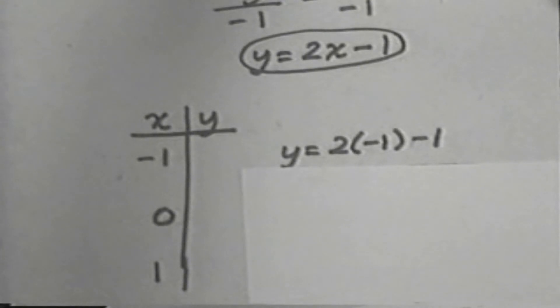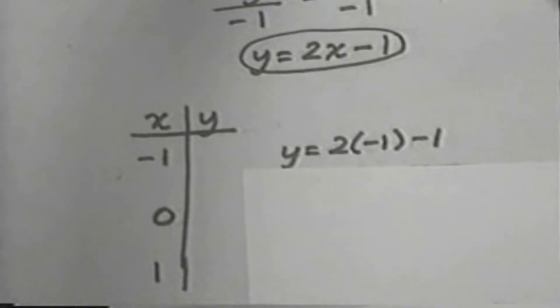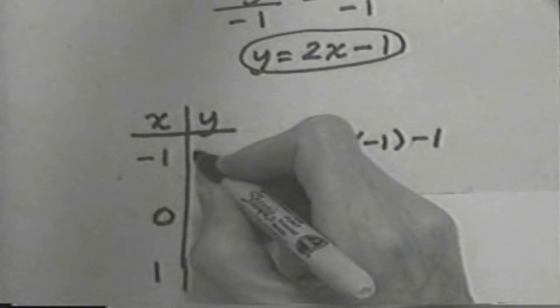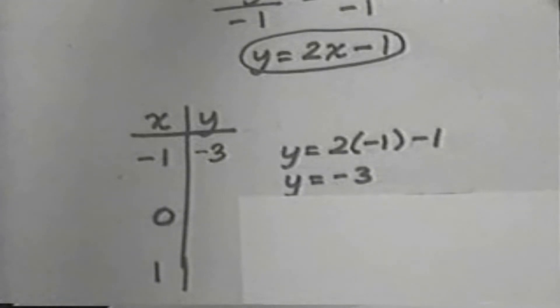If x is negative 1, then y is 2 times negative 1, subtract 1. Remember, we're filling in negative 1 in place of x. And so this gives us negative 2 subtract 1, which is negative 3. And so the point is negative 1, negative 3.